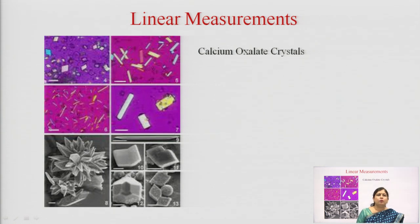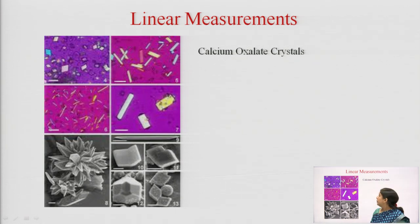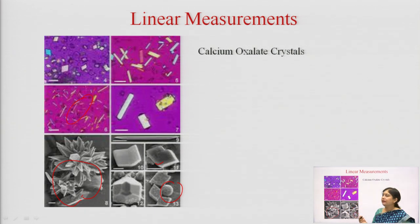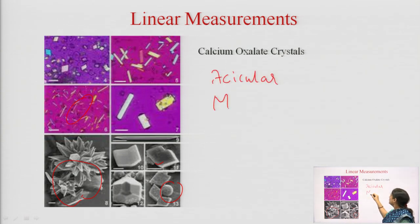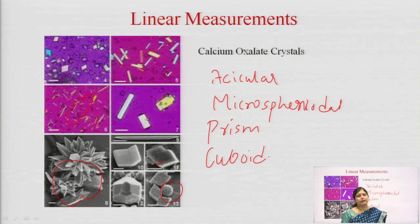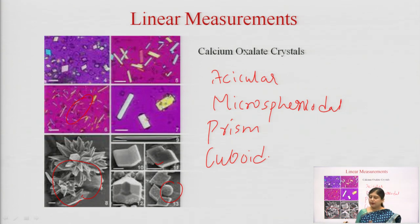Calcium oxalate crystals are present in plants and can be in many shapes and forms. They can be rosette-shaped, cubical, spherical, or needle-shaped (acicular). When acicular crystals come in a bunch they form micro-sphenoidal clusters; they can also be prismatic or cuboid. If we determine the size of these calcium oxalate crystals and report it, it becomes an identifying character for the quality of that particular drug substance.